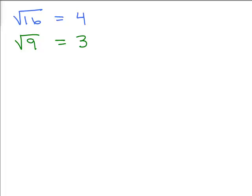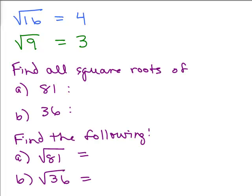So here's the difference, and this is very kind of confusing. So if I say, find all square roots of 81, this would mean, well, 9 and negative 9. And finding all the square roots of 36, you could say 6 and negative 6.